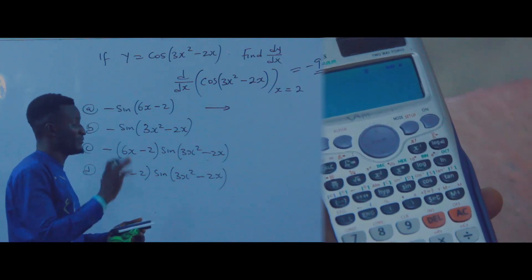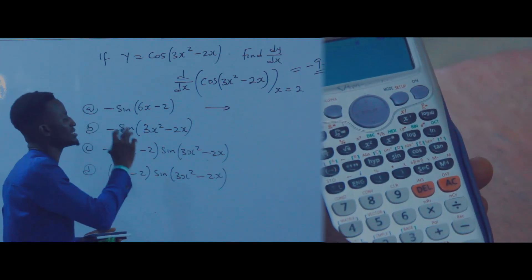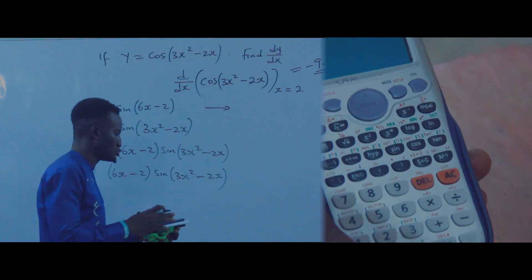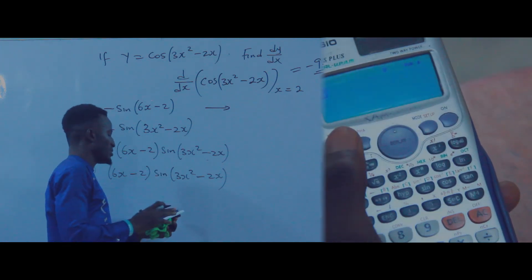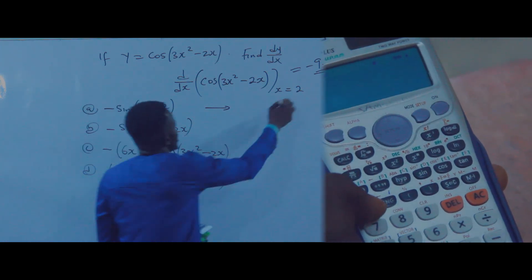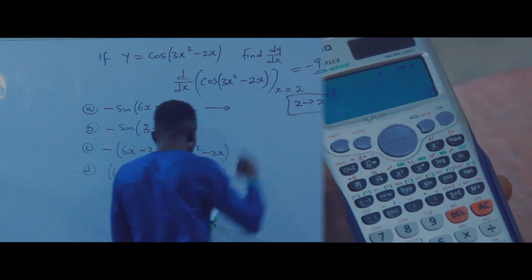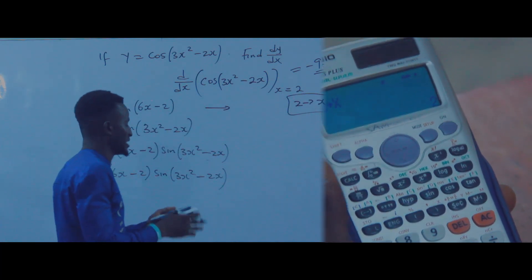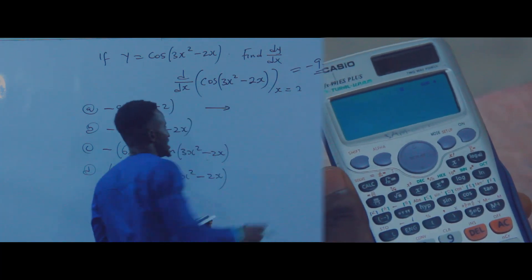Press AC. Before you test option A, you have to save x as 2. Press 2, then press Shift, then RCL, then press the button for x. It will save x as 2. Once it is saved, press AC again.